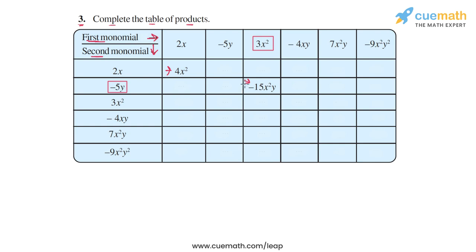Now we have to fill up all the other cells of this table in a similar manner. Because there are many cells to be filled, I won't write out the detailed calculation for each case. Instead, for each combination of monomials, I will simply observe the product of the coefficients and the product of the algebraic factors and write the overall product accordingly.